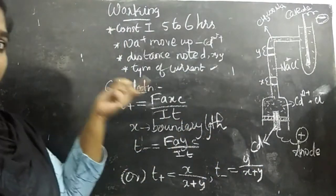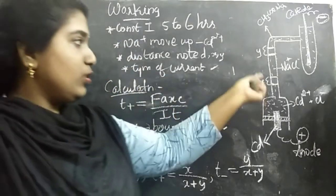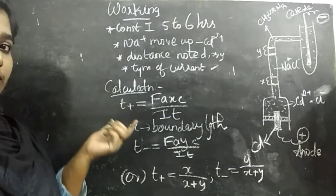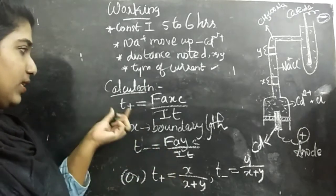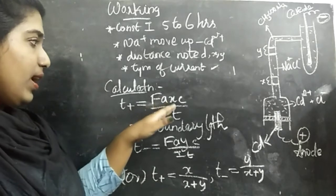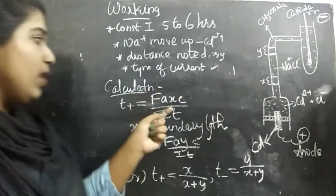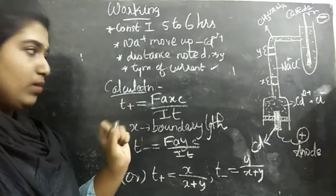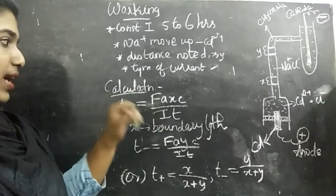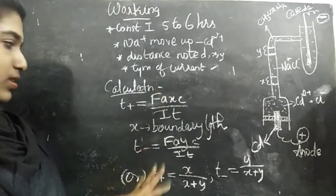VL minus and x will help to calculate the Na+ transport number. After these 5 to 6 hours, we should note the time exactly and the distance moved by this boundary, that is x and y. Using this, we are going to calculate the transport number. For calculation according to this method, there is a formula for T+ that is for the cation. We say it as FAXC by IT. Here F is Faraday, A is the cross section of this vertical tube, x is the distance moved by the boundary, C is the concentration, I is current passed, and T is the time passed.